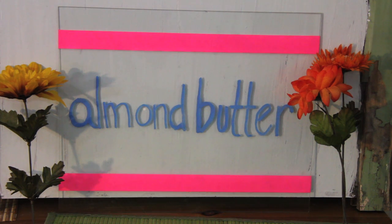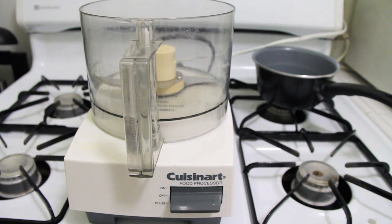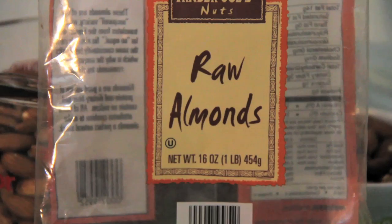Hey everyone, in this episode we will make homemade almond butter. You will need two things, a food processor and at least three cups of raw almonds.